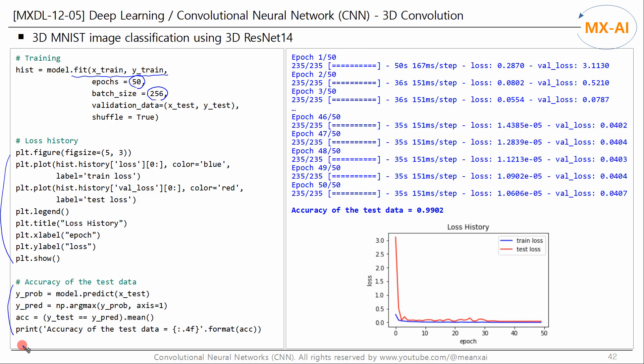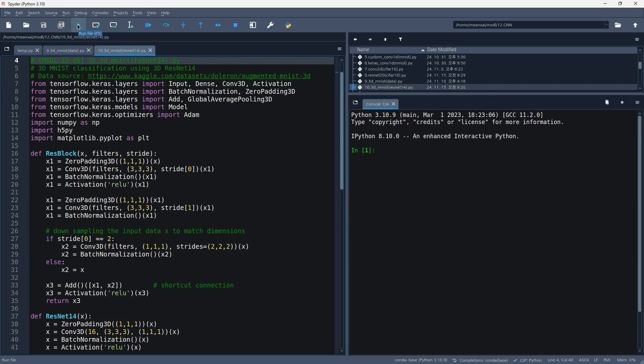During training, the training error and the test error are reduced like this. You can see that it learns normally without overfitting. The accuracy of the test data was 0.9902. Let's run this code.